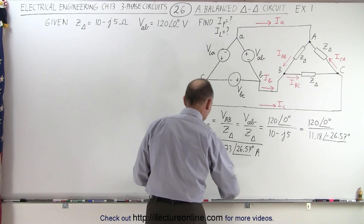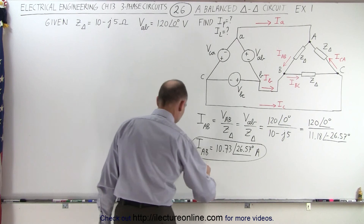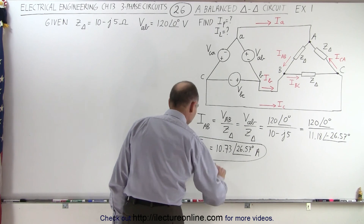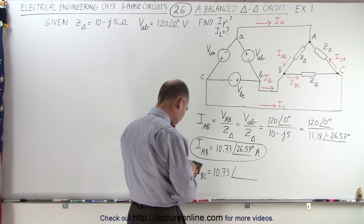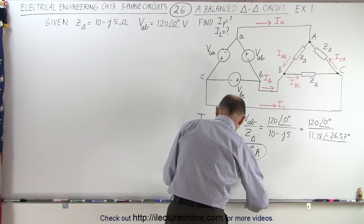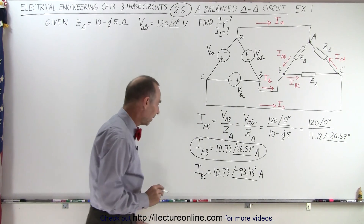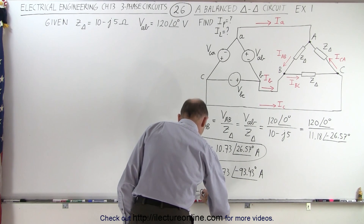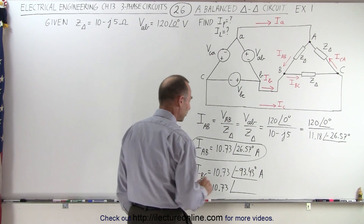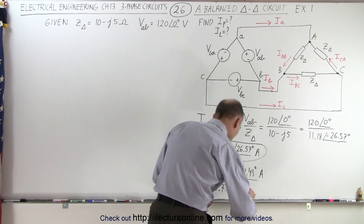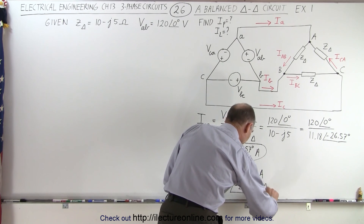Now we're going to find our second current by offsetting it by 120 degrees. So IBC is equal to 10.73 amps with a phase angle of 26.57 minus 120, which is minus 93.43 degrees. And finally, ICA is equal to the same magnitude of 10.73, with a phase angle of 26.57 minus 240, which is minus 213.43 degrees. All in terms of amps.